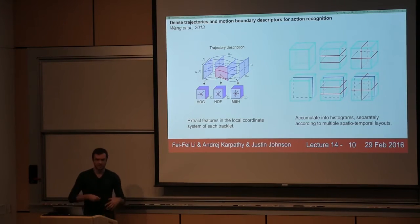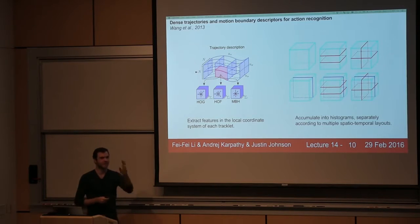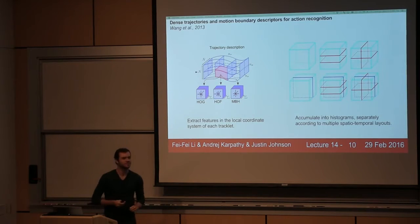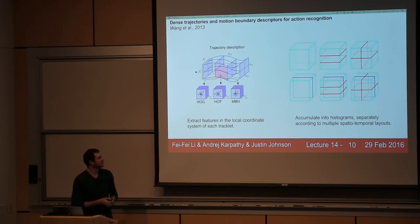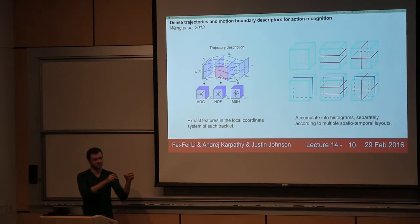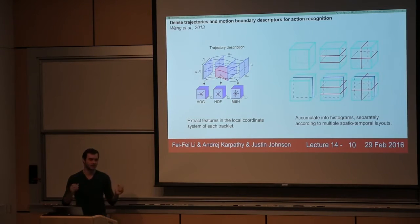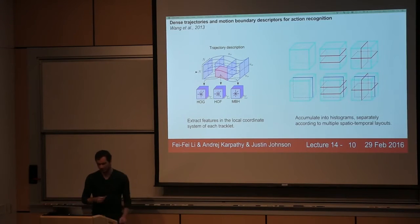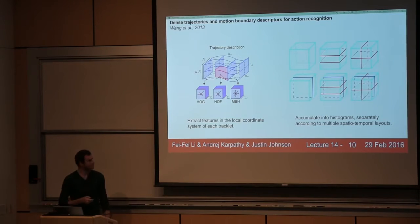Question: how do you find the tracklet? A tracklet is just 15 frames of XY positions — 15 XY coordinates — and then we extract features in the local coordinate system.